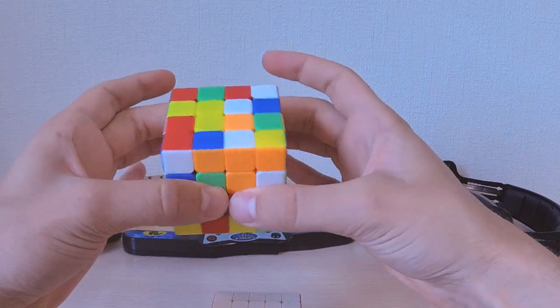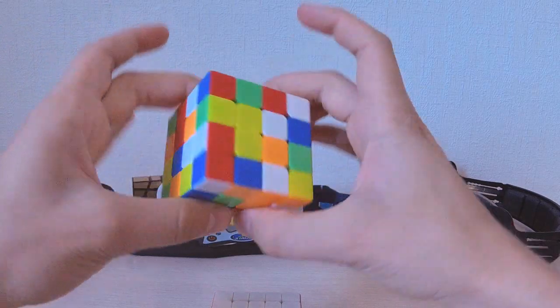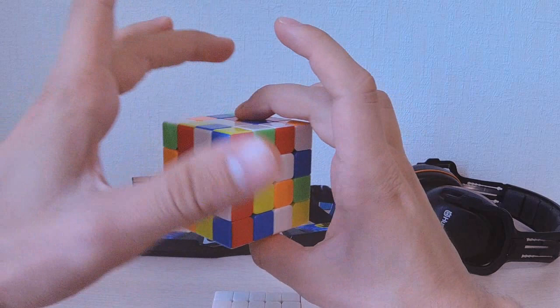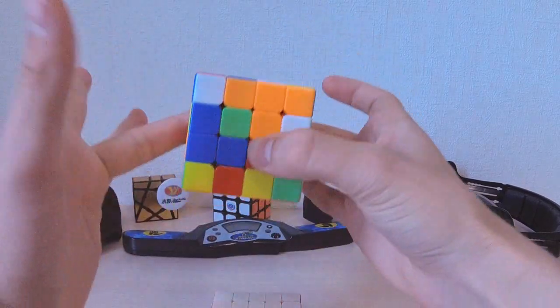You look at your buffer, whatever it is, let's say it's UFL. This one should go to there, so you memorize this wing and you put your finger on the entire BL edge, like so.